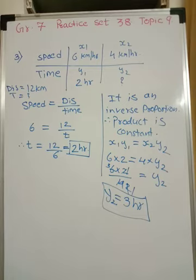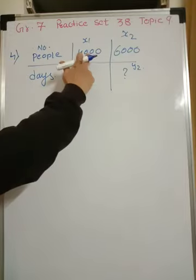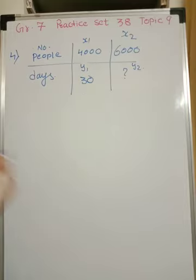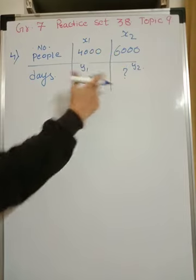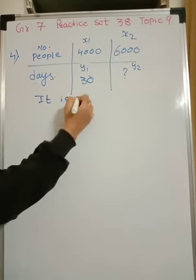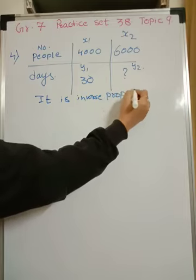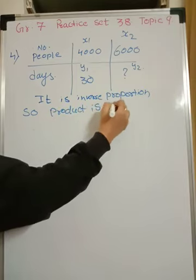Let's go to the fourth problem. The stock of grain in a government warehouse lasts 30 days for 4000 people. Stock is fixed of food, grain. If there are 4000 people, then it lasts for 30 days. Now people have increased, so it will be exhausted fast. If number of people will be increasing, then automatically it will last for less than 30 days. If one quantity is increasing, another is decreasing. Therefore, it is inverse proportion. So product is constant.